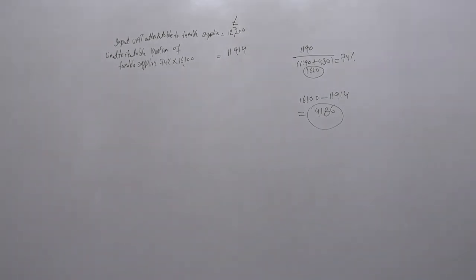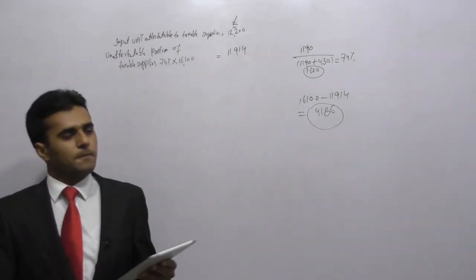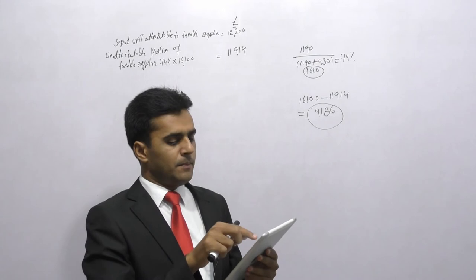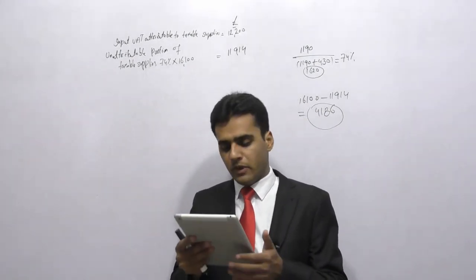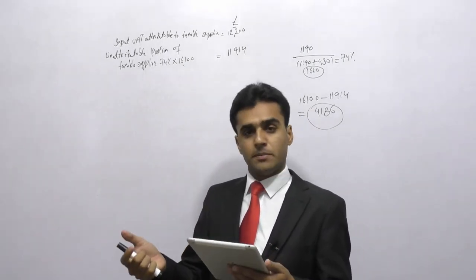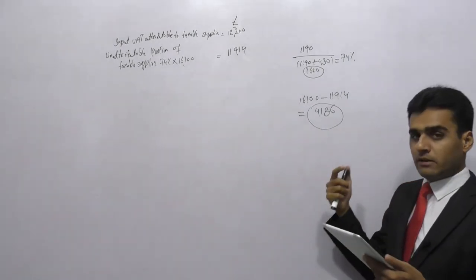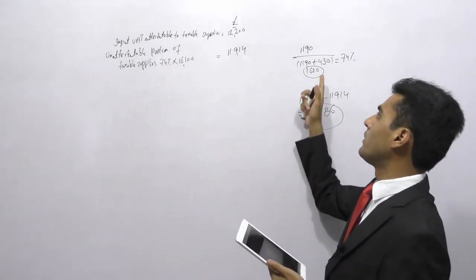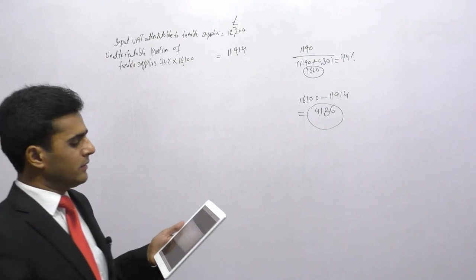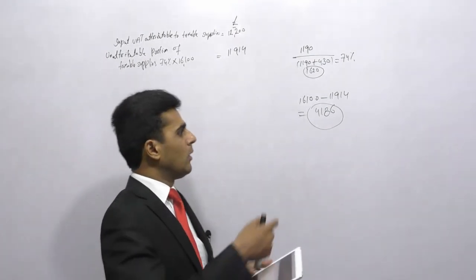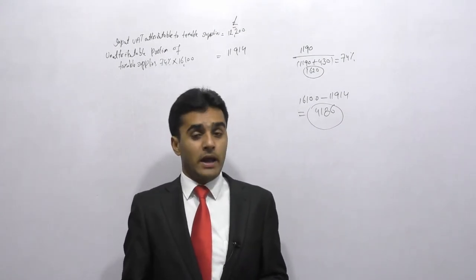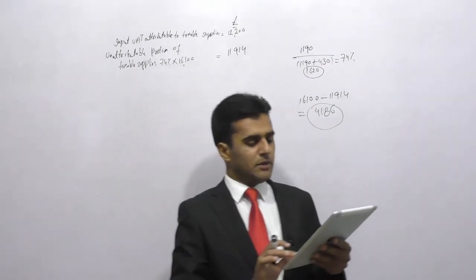Both the £4,900 attributable to exempt supplies and the residual exempt portion of £4,186 may potentially be recoverable if any of the three de minimis tests apply. So let's look at these three de minimis tests from your notes on page 95. If any of these tests is satisfied, the entire exempt input VAT becomes recoverable.